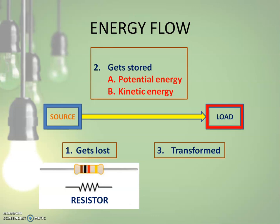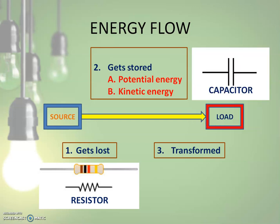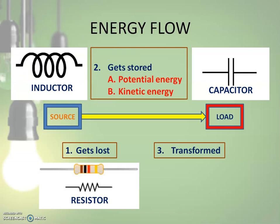The energy that is lost is happening in the component called the resistor, and in a resistor energy is mainly lost in the form of heat. Coming to the form where it is stored as potential energy, it is stored in an element called the capacitor, and as kinetic energy it is stored in the component called the inductor. In a capacitor it is stored in its electric field, and in an inductor it is stored in the magnetic field. These three components — resistor, inductor, and capacitor — are called the basic electrical or electronic components that make the basic structure of an electrical or electronic circuit.